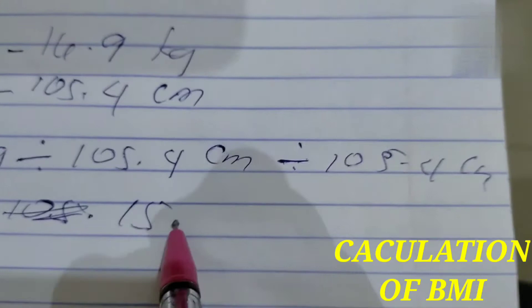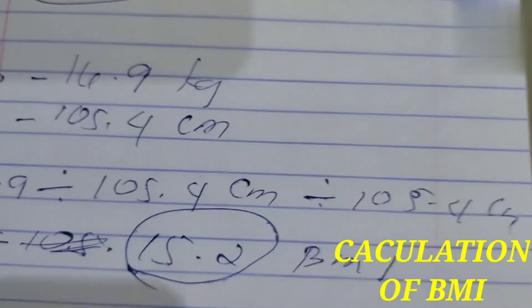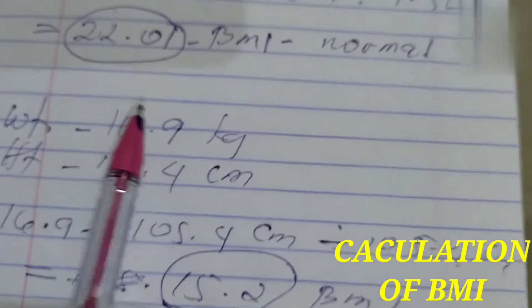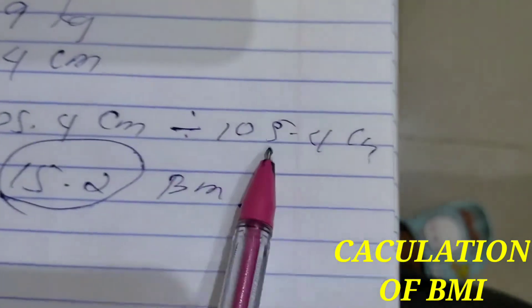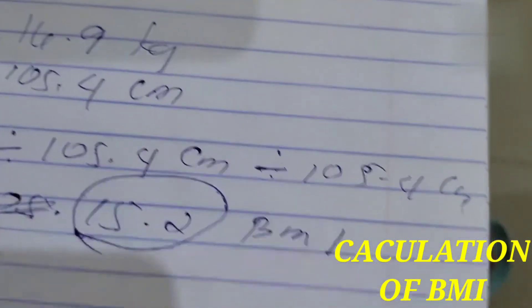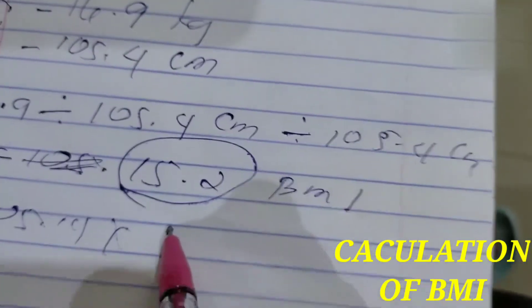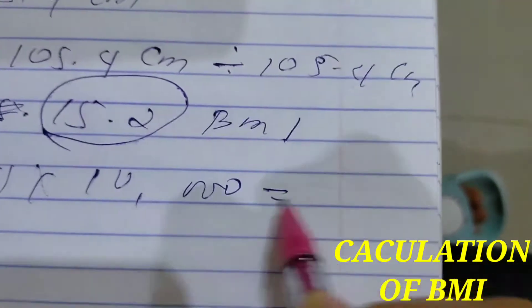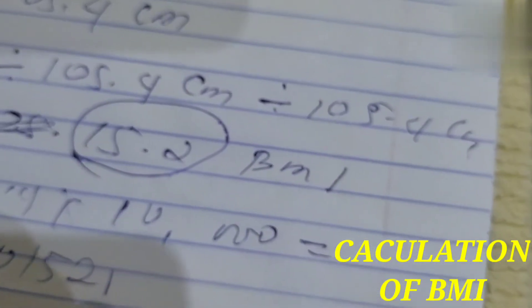Okay, so this is how you calculate. Some people multiply the centimeter two times. So if you want to multiply 105.4 centimeter times 105.4 centimeter, or you can multiply it times 10,000, you can get the result of 0.001521.